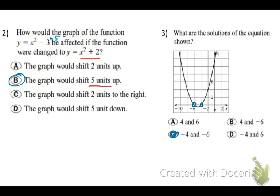Number 2. So number 2, it says, how would the graph of the function y = x² - 3 be affected if the function were changed to x² + 2? So to move from negative 3 up to positive 2, that's our y-intercept, it has to move up 5 steps. So negative 3 plus 5 is positive 2. So your answer choice is b.